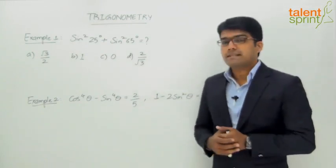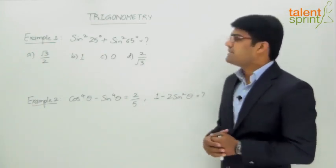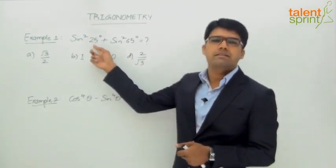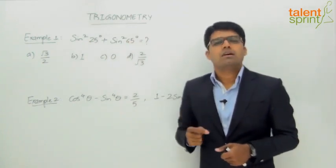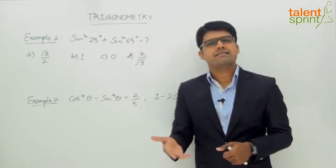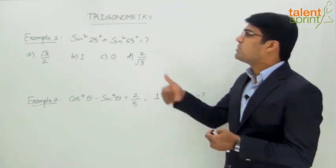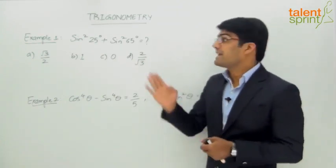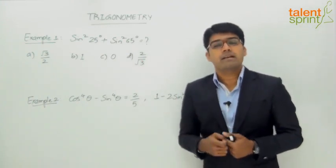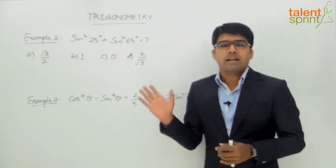Let us look at the first example. It says sin²25° + sin²65° is equal to what? Obviously, we have no idea what sin 25° or sin 65° is. We know the trigonometric ratio of sine only at specific angles like 30°, 60°, 45°, and so on. So there is no point trying to substitute those values — we need to use a trigonometric identity or formula to arrive at the required answer.